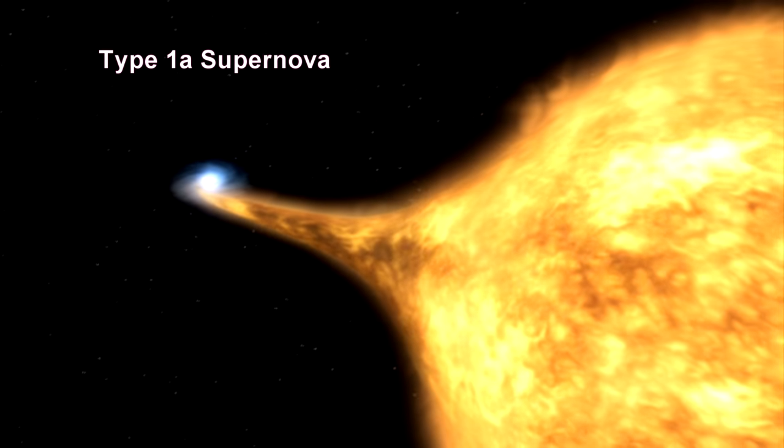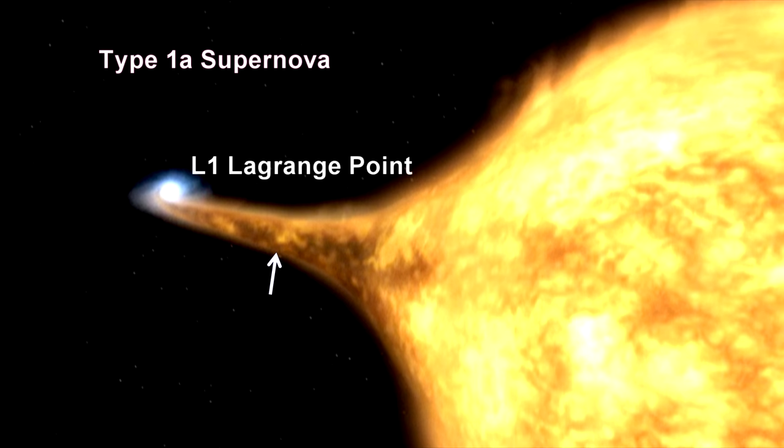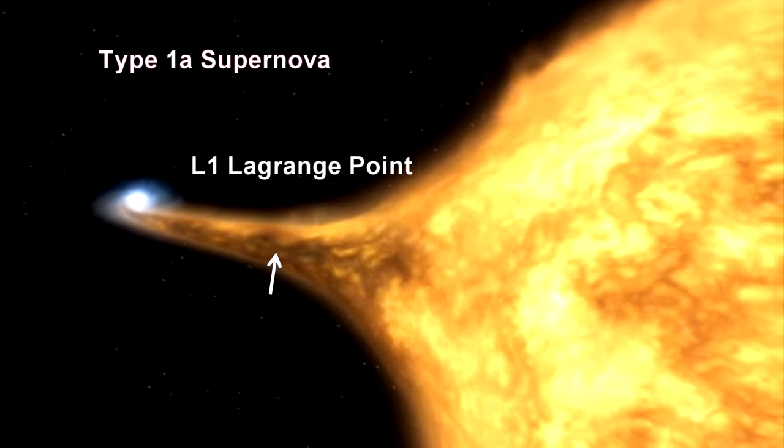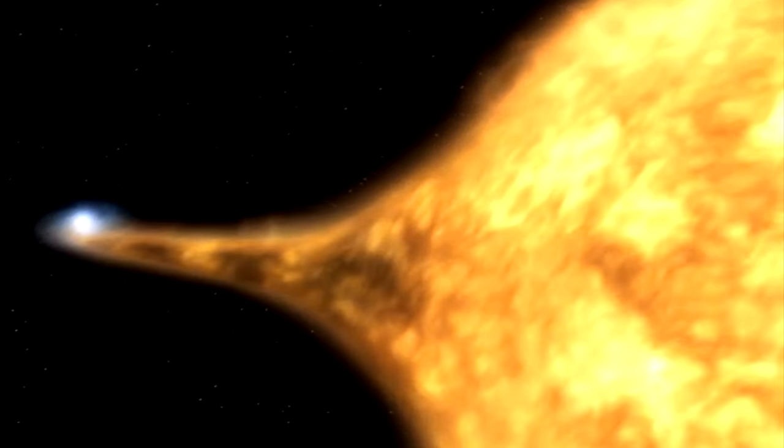1. A massive red giant star has a small stellar companion. 2. Mass flows from the giant to the dwarf through the L1 Lagrange point. You'll remember Lagrange points from our discussion on Jupiter in this segment on our solar system.